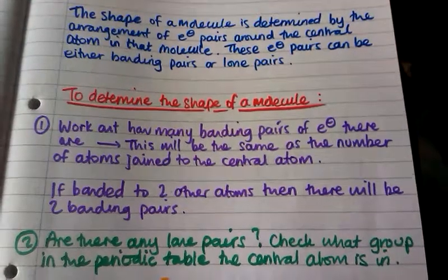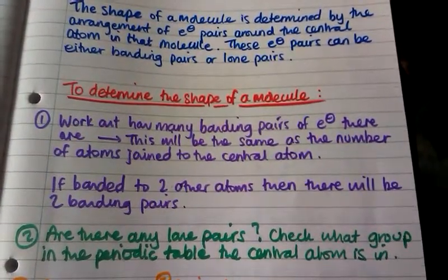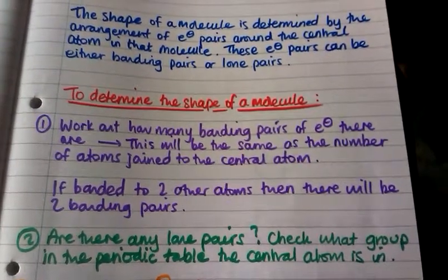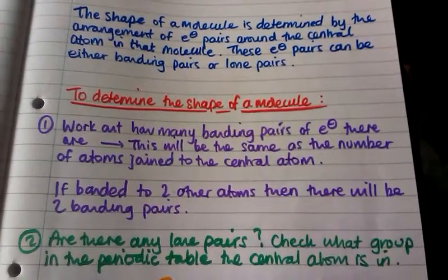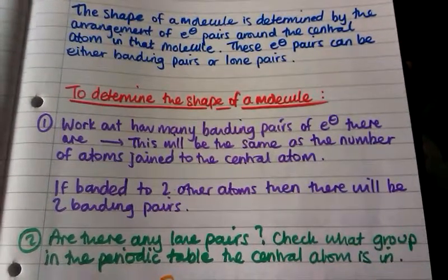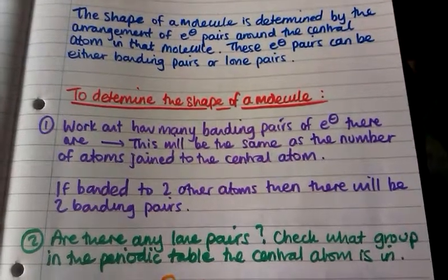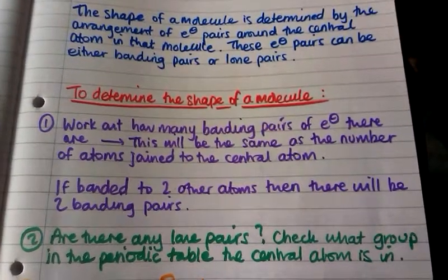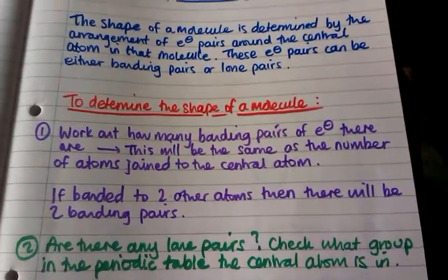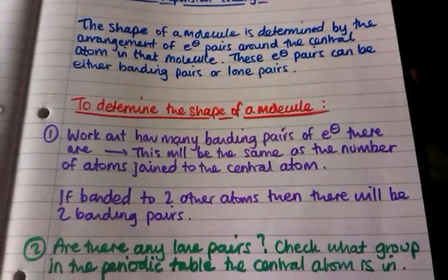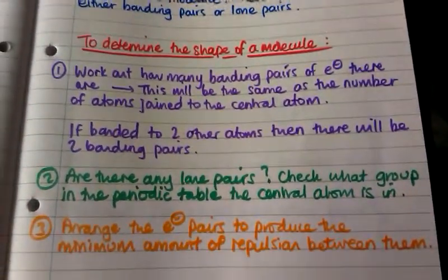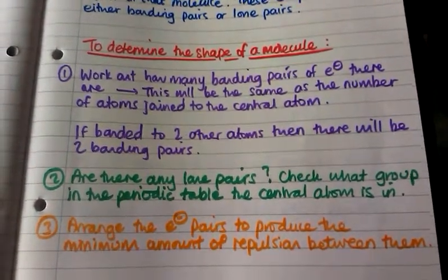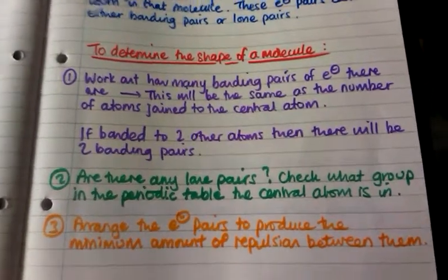Secondly, we need to determine whether or not there are any lone pairs of electrons, so to do that we need to check what group in the periodic table the central atom is in. The examples in this video won't have any lone pairs, so we don't need to worry about that just yet — I will be covering molecules with bonding pairs and lone pairs in my next video on shapes of molecules and ions. Finally, we arrange the electron pairs to produce the minimum amount of repulsion between them.